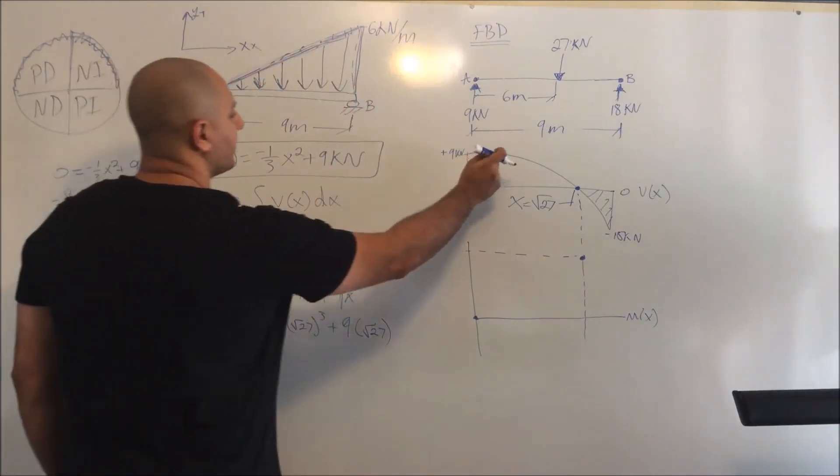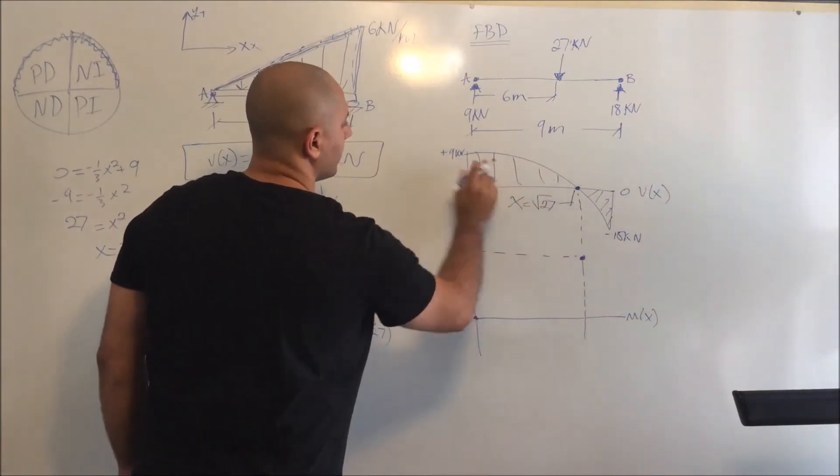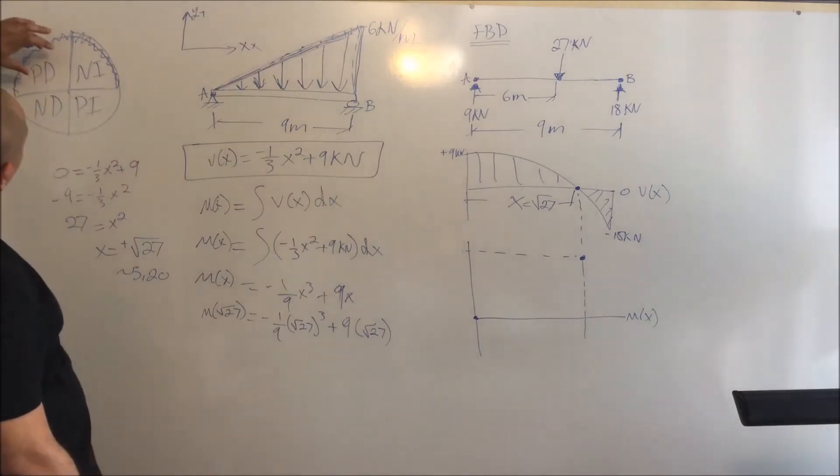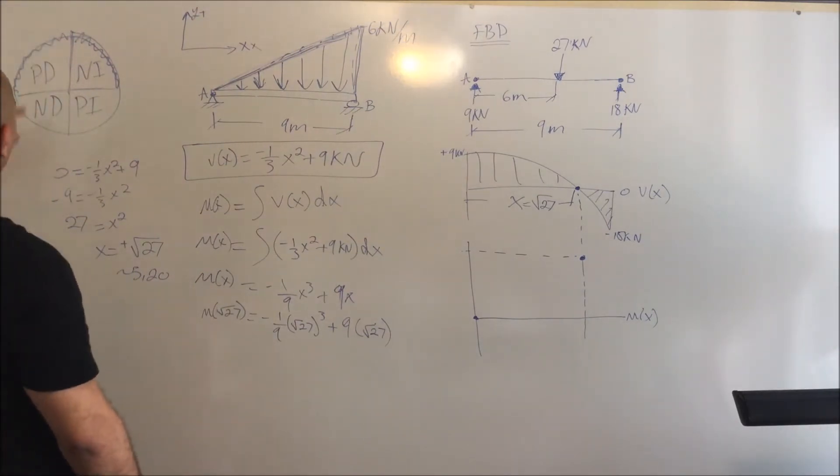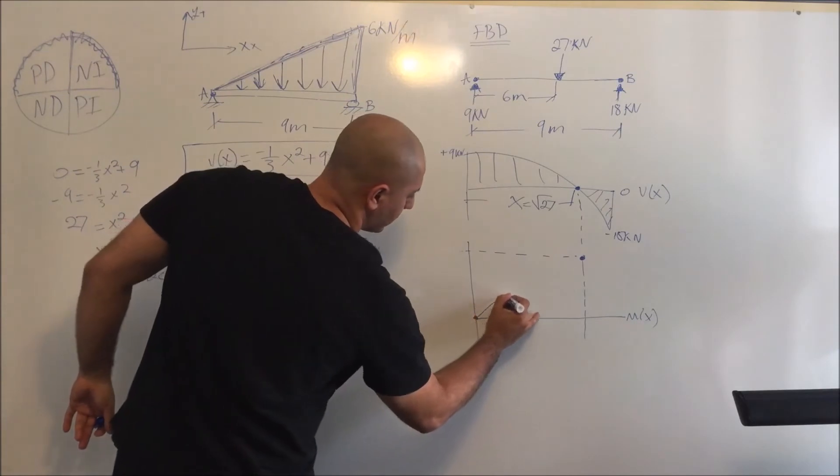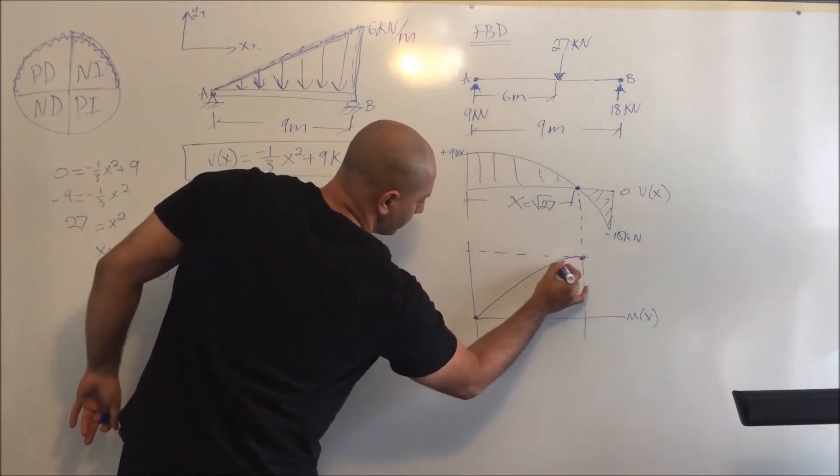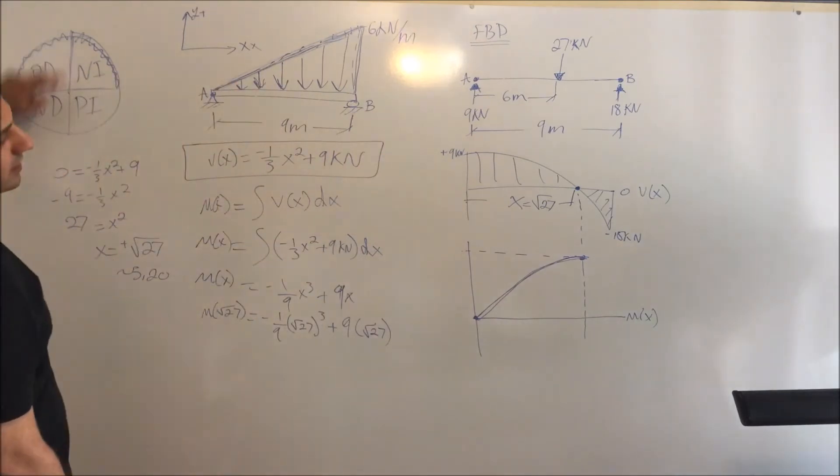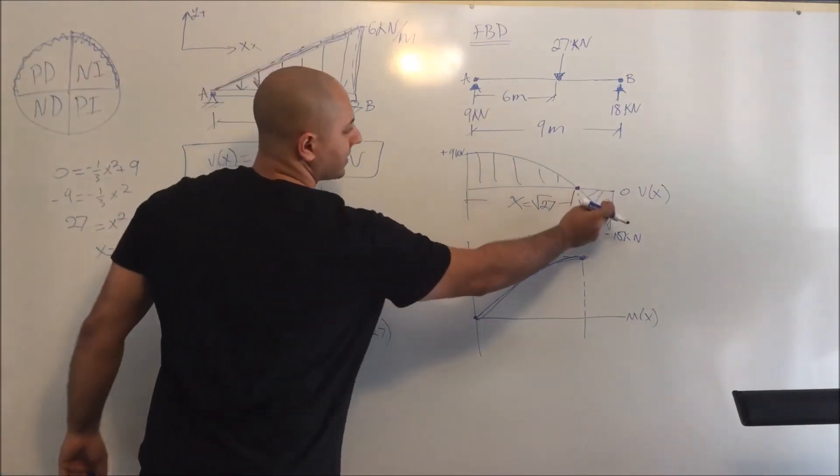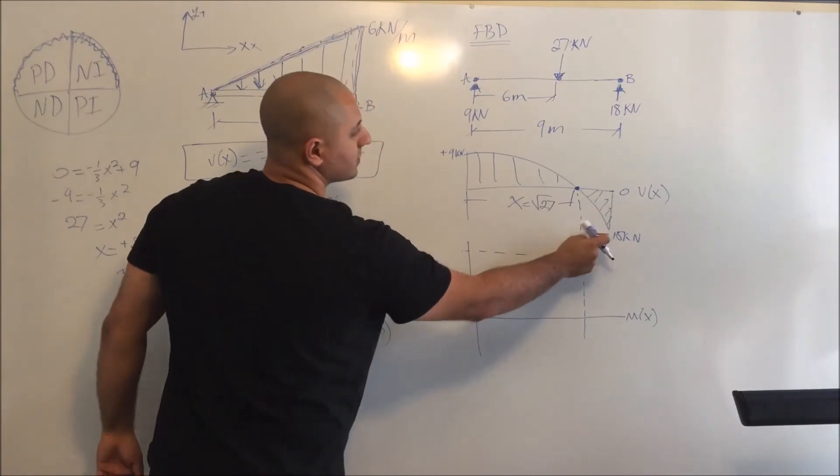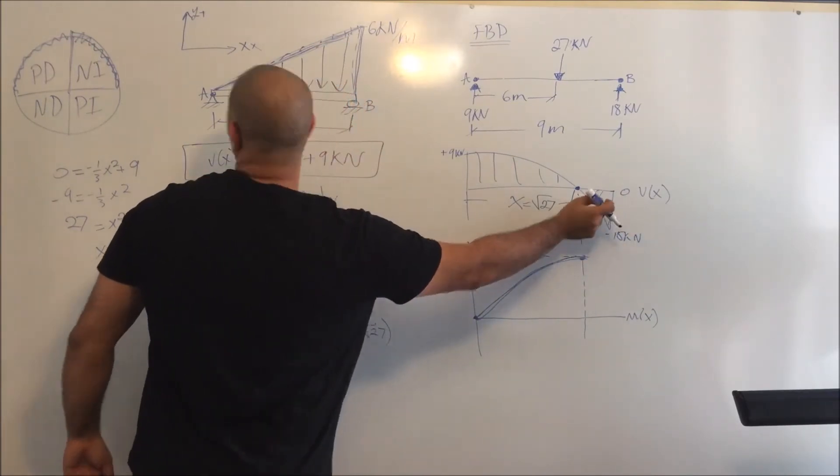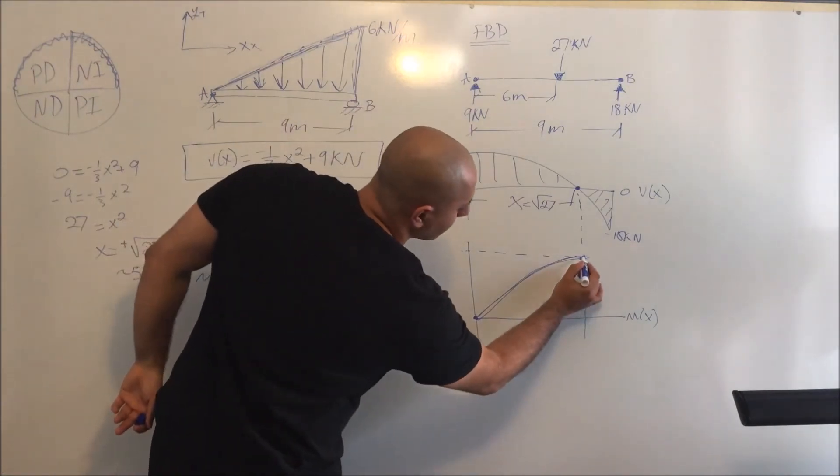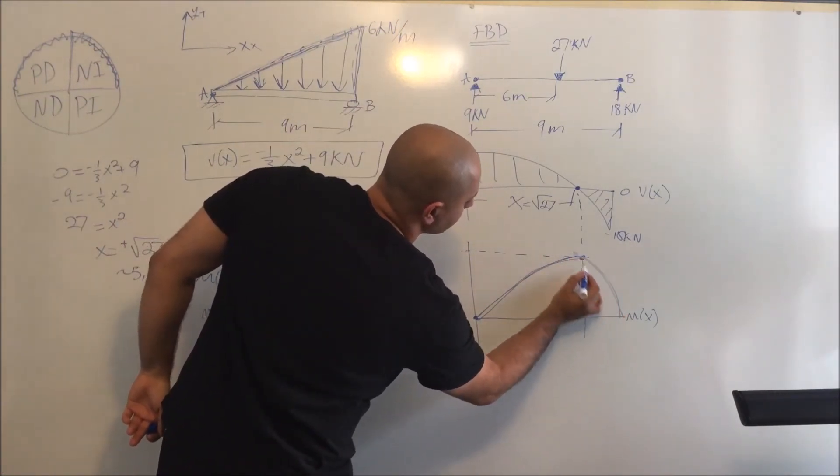And now what we have here: we have positive but it's decreasing. So we go back into here, positive decreasing. At this point you have negative increasing. So it's negative increasing, and it should look like so.